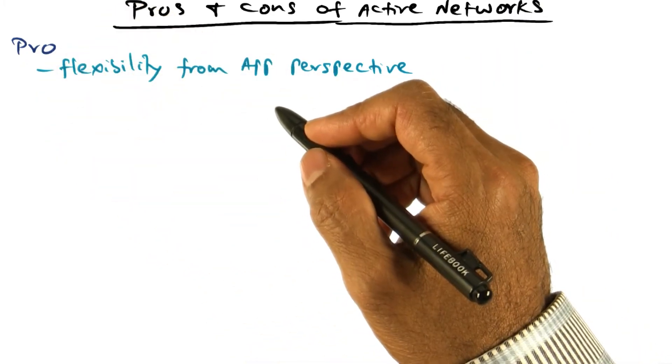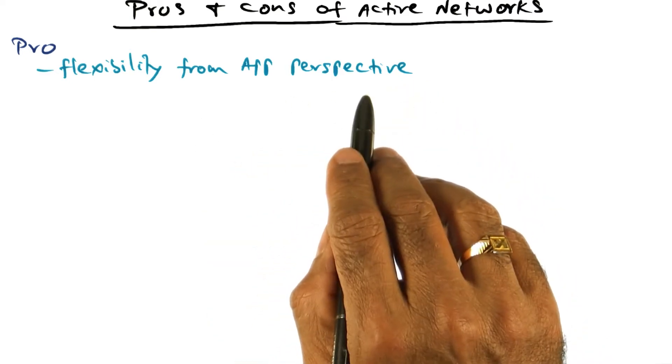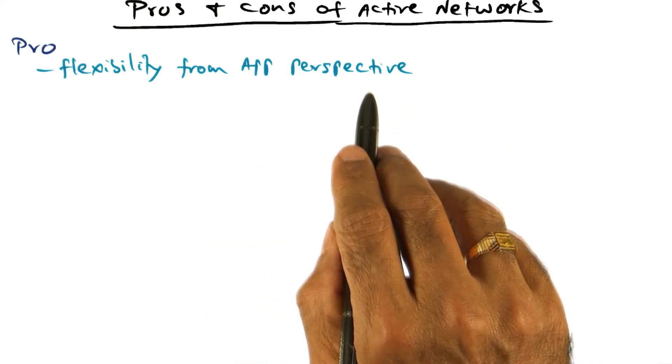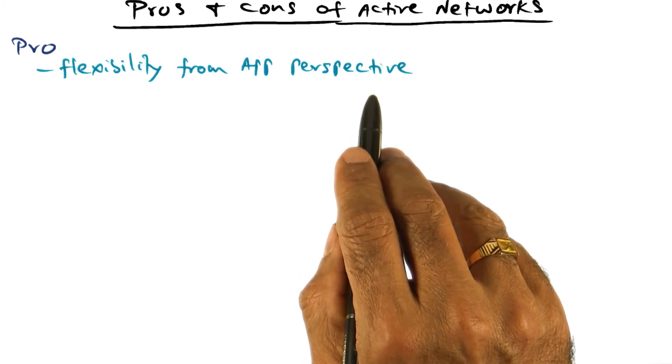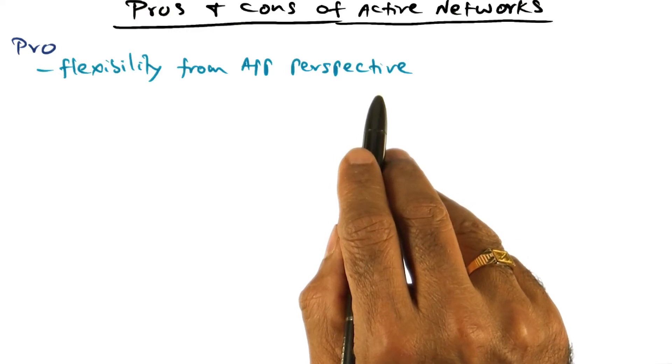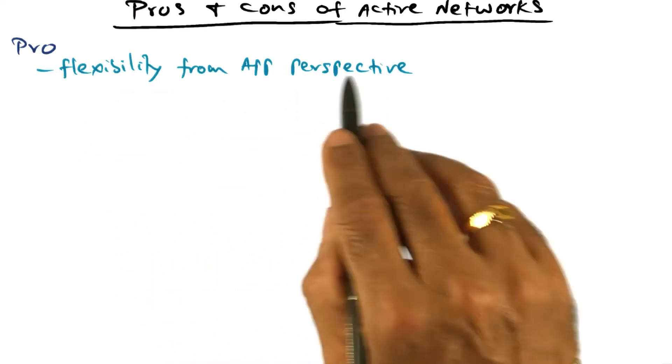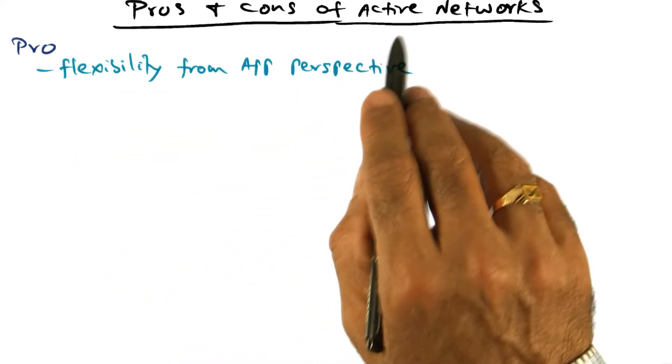The pro is something we've been stressing all along, and that is the flexibility from the point of view of an application perspective. The fact that you can ignore the physical layout of the network and slap on your own virtualization of what you want to accomplish for your network flow on top of the physical infrastructure is the key selling point for active networks.